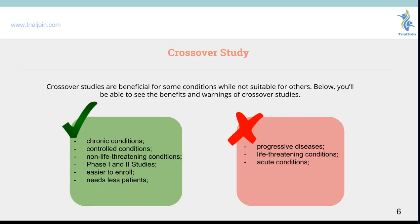Crossover studies are beneficial for people with chronic conditions, controlled conditions, and not life-threatening conditions. They are usually involved in phase one and two studies. They're not good for progressive diseases such as oncology, life-threatening conditions, or acute conditions.